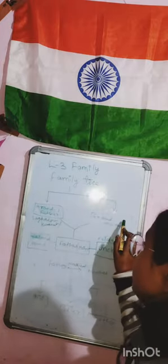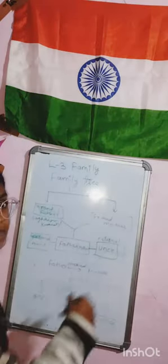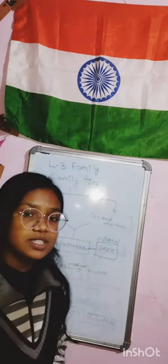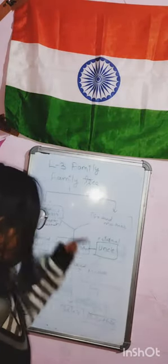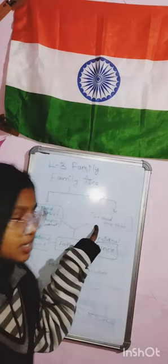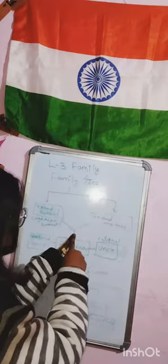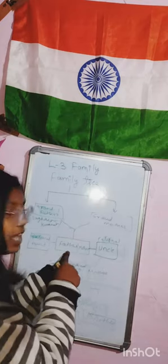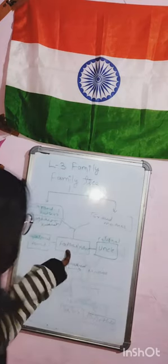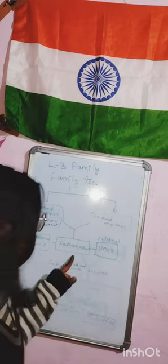My grandmother's name will be written next — every person in this universe has a name, so we write grandmother's name here. When we combine both grandfather and grandmother, we get our father. Then our father will get married with our mother, and that is our next stage.